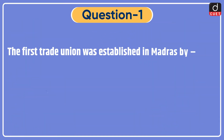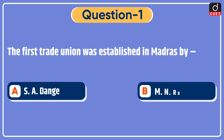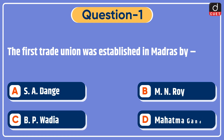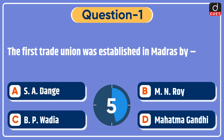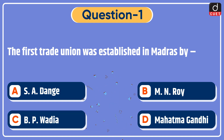Now let's begin today's session. First question: the first trade union was established in Madras by — S.A. Dange, M.N. Roy, BP Wadia, or Mahatma Gandhi? The correct answer is option C, BP Wadia.